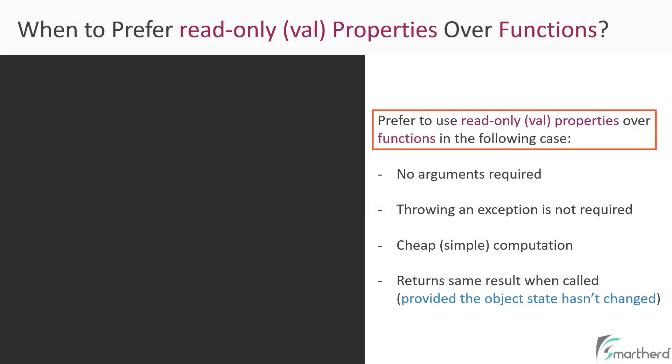So in Kotlin, you should prefer using properties over function if the following conditions are met. Notice here that by property, I mean only the read-only properties which are declared using the val keyword. If a piece of code in your algorithm requires no argument, if your code does not throw an exception, if your code is cheap in terms of resources, that is it only does simple computation inside it, and if your code always returns the same result when executed, then in such a case, you should always use a read-only property over defining a function.